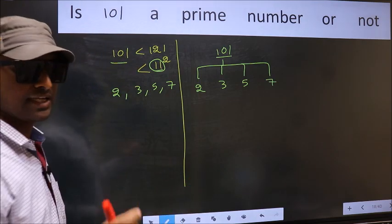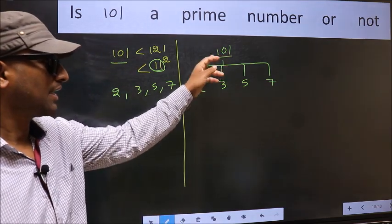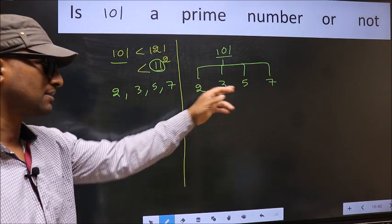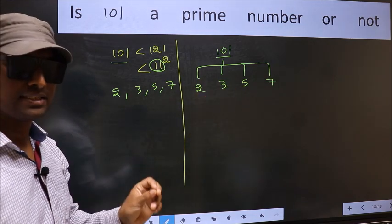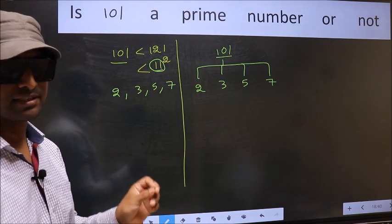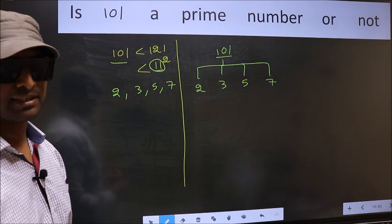If the given number is divisible by any one of these numbers, we say it is not a prime number. Otherwise it is prime. Did you understand the method?